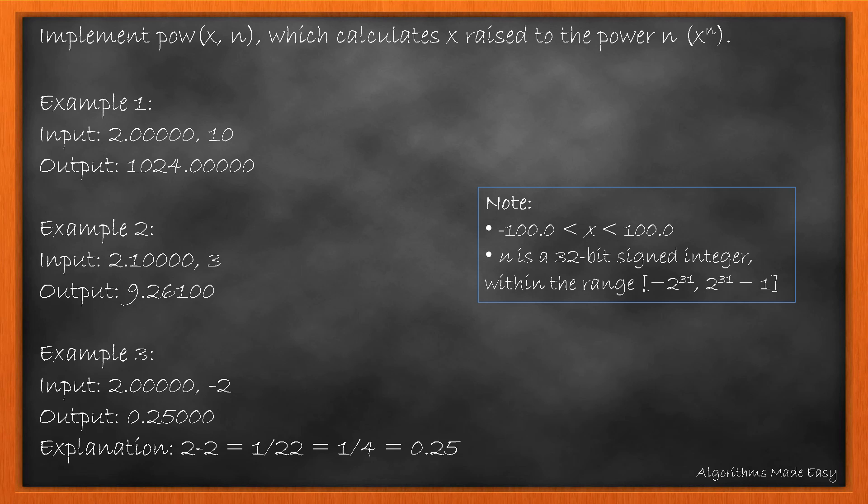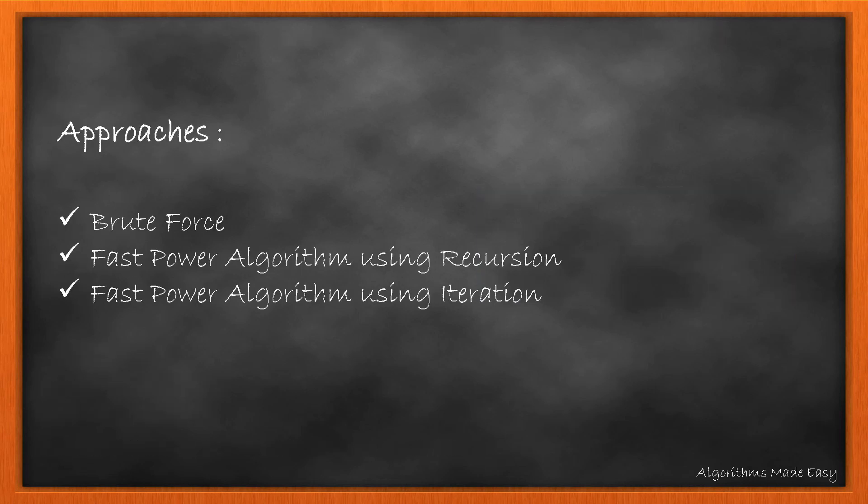We need to implement the power function which calculates x raised to the power of n. Examples show that input can be a whole number, a decimal number, or a negative number. The note attached with the question says x will be between minus 100 to 100, while n is a 32-bit integer ranging from minus 2 raised to 31 to 2 raised to 31 minus 1. We will discuss 3 approaches for solving this question, along with complexity analysis and code for all approaches.